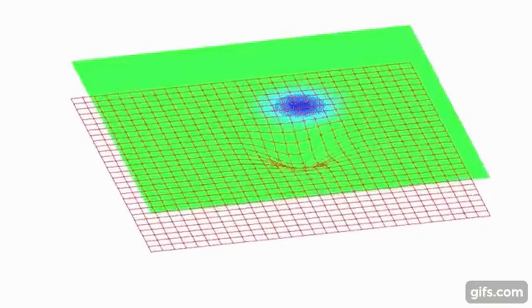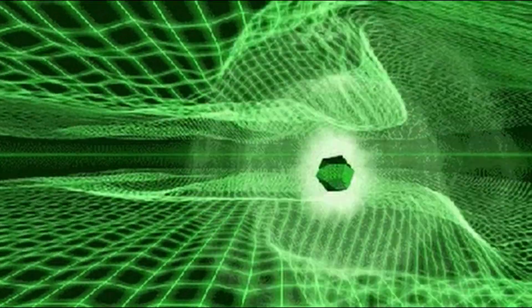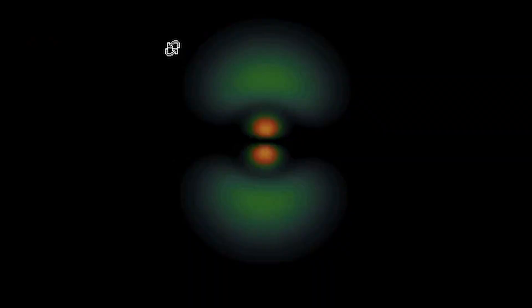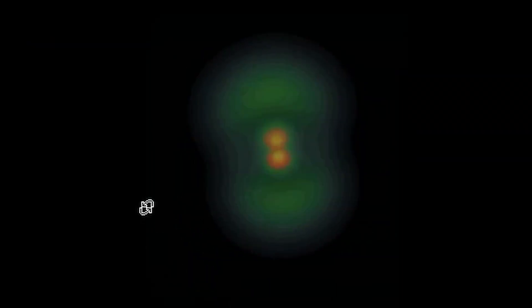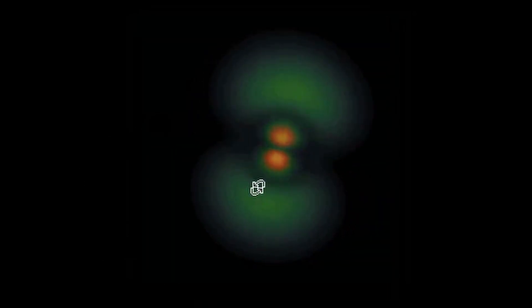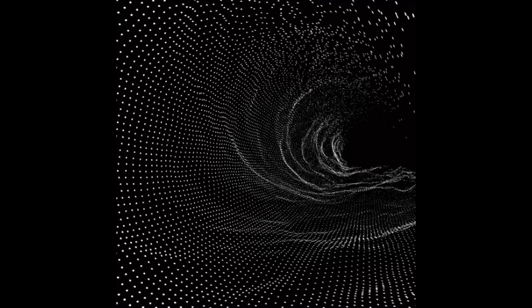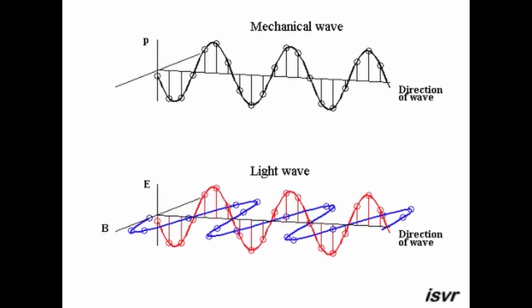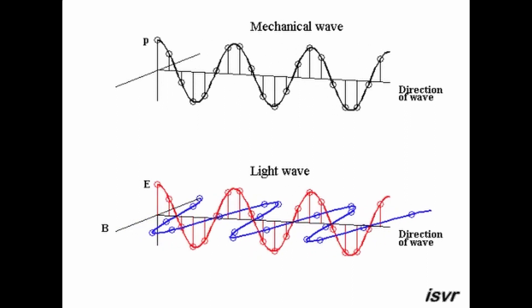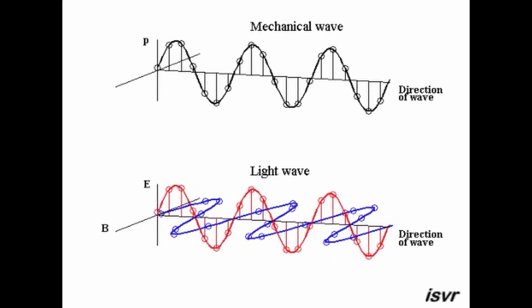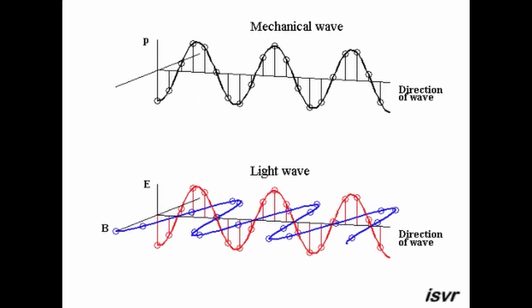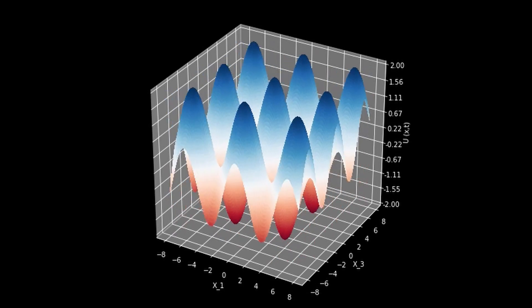3. Orbital Angular Momentum (L) and Magnetic Quantum Number (M). In the context of atomic physics, angular momentum is often associated with the motion of electrons around the nucleus. The quantum number l determines the shape of the electron's orbital and is related to the angular momentum operator L². For example, l = 0 corresponds to an s orbital (spherically symmetric), l = 1 corresponds to a p orbital (dumbbell shape), l = 2 corresponds to a d orbital, and so on. The quantum number m specifies the orientation of the orbital in space, which influences the electron's behavior under a magnetic field.